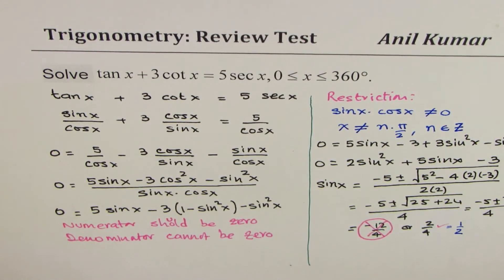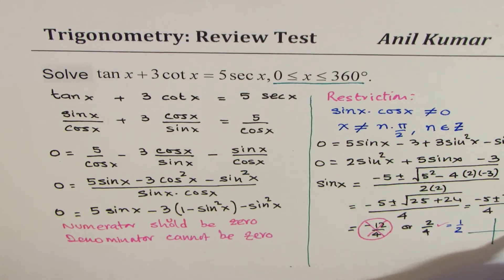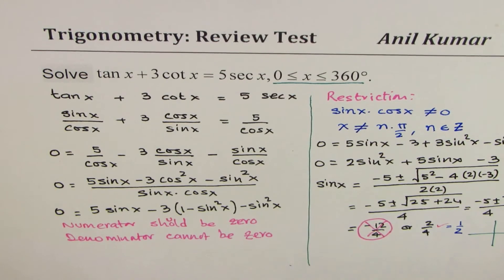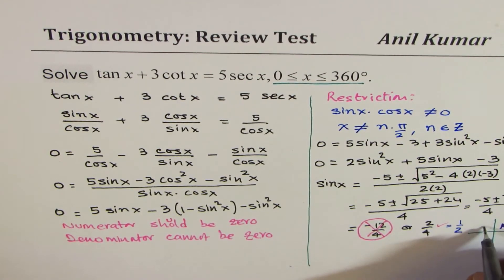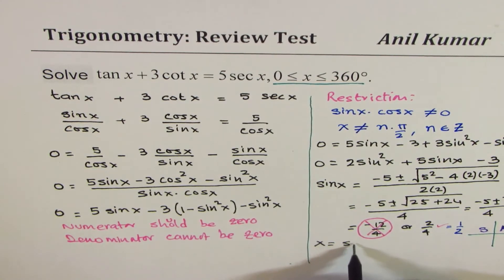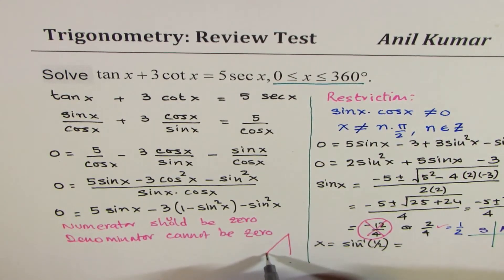Now, when is sine x half? Within this interval given to us, sine x is half in quadrant 1 and in quadrant 2. Sine is positive. All are positive here, and sine is positive in quadrant 2. So that means x is equal to, let's find out, sine x is equal to half. So x is equal to sine inverse of half. You could also use a special triangle. Let's use special triangle here.